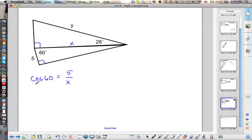Multiply by x on both sides and then divide by cosine 60. So I get x cosine 60 equals 5, and then x equals 5 over cosine 60.